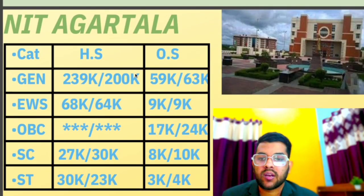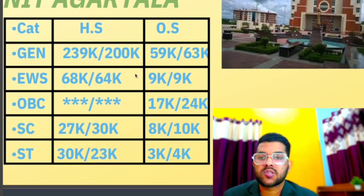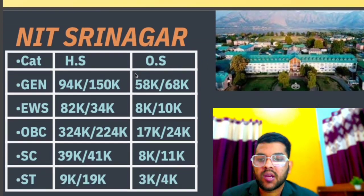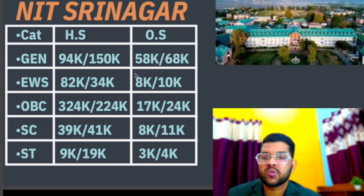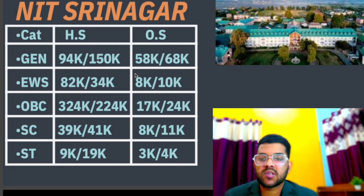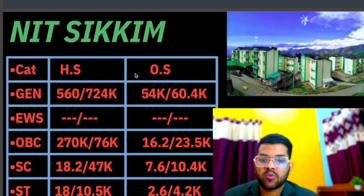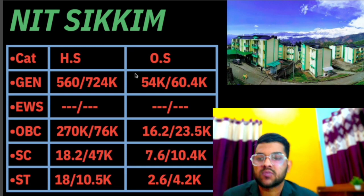For NIT Agartala: general 59,000, EWS 9,000, OBC 17,000, SC 8,000, ST 3,000 — other data you can check sideways. That is homestate for H.S. For NIT Aizawl (Mizoram): 58,000, EWS 8,000, OBC 17,000, SC 8,000, ST 3,000 — for general, EWS, OBC, SC, ST category rank. General means CRL rank and EWS/OBC/SC/ST means their category rank. For NIT Sikkim: general 54,000, OBC 16,200, SC 7,600, ST 2,600.